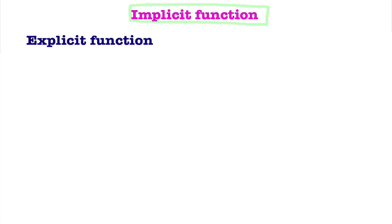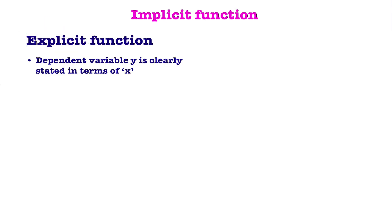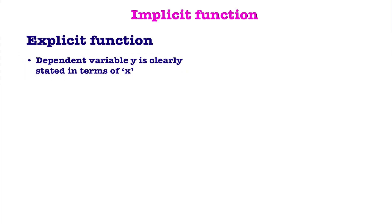To understand the definition of implicit function, first you must know what is explicit function. What is the general meaning of explicit? Explicit means clearly stated. There is no room for confusion. We will try to understand the definition of explicit function and I will explain about it clearly with the help of examples.